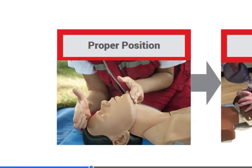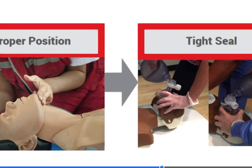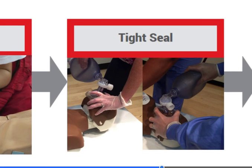Put the patient in the proper position. In the absence of neck injury, tilt the forehead back and lift the chin. Tighten the seal of the mask by using the EC clamp, which is the letters E and C formed by the fingers over the mask.